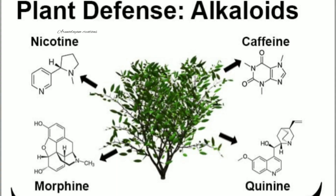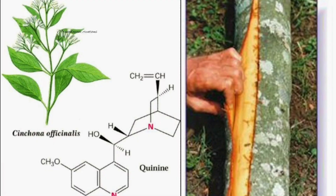First one: alkaloids. These are the nitrogenous byproducts or waste materials produced in plants and they are sometimes poisonous also. These alkaloids are stored in different parts of plants. Cinchona officinalis — its bark has an alkaloid called quinine, which is used as an anti-malarial drug to cure malaria.